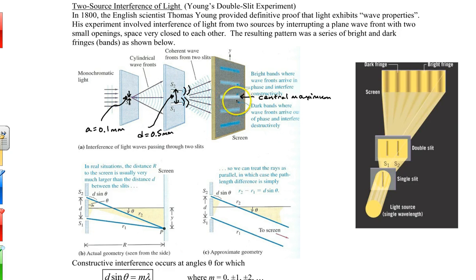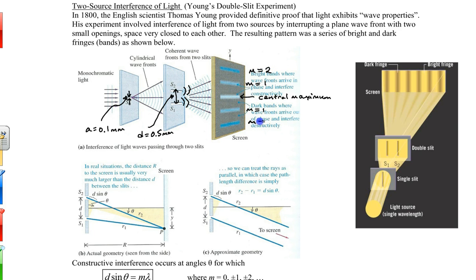The pattern observed on the screen is called an interference pattern. The bright band in the middle is called the central maximum. On either side we use order numbers: m = 1 (or ±1), m = 2 (second order), and so on. This is the whole interference pattern consisting of fringes.